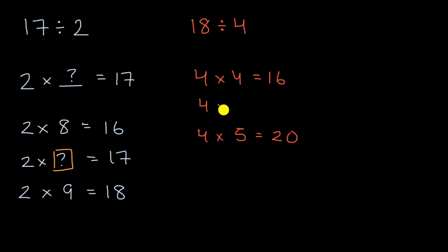So 4 times question mark is equal to 18. This helps us realize that because 18 is between 16 and 20, this question mark right over here is going to be between 4 and 5. So 18 divided by 4 is going to be 4 point something.